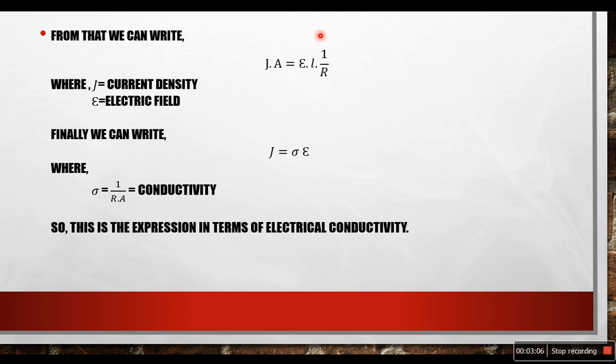So from there we can write this equation. As you can see J is the current density and epsilon is the electric field which we talked about a moment ago. Finally we can write from here J equals sigma into epsilon, where sigma is the conductivity which can be written as 1 by R into A by L. Where R is the resistance and A is the cross sectional area. So this is the expression of Ohm's law in terms of electrical conductivity.